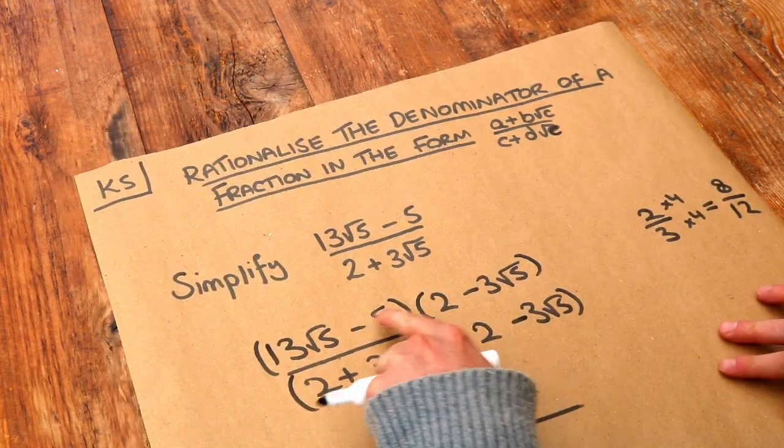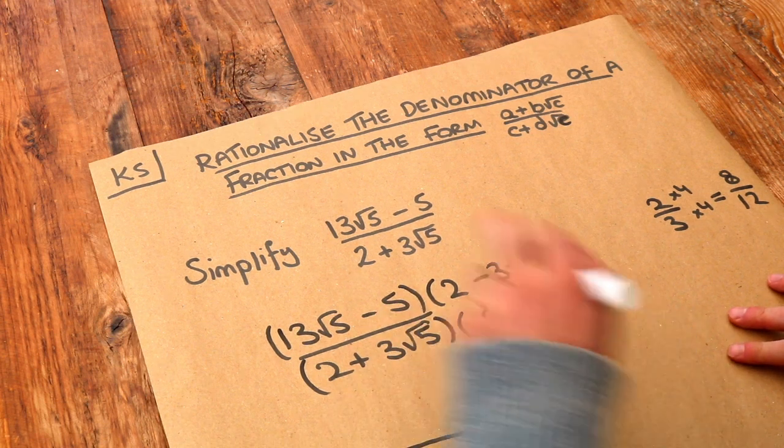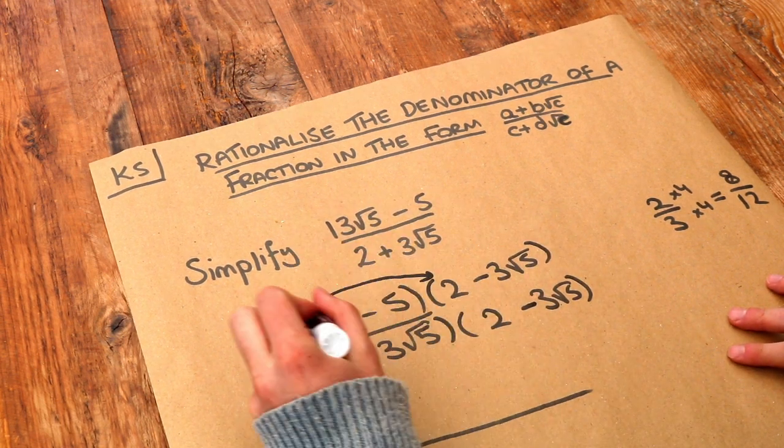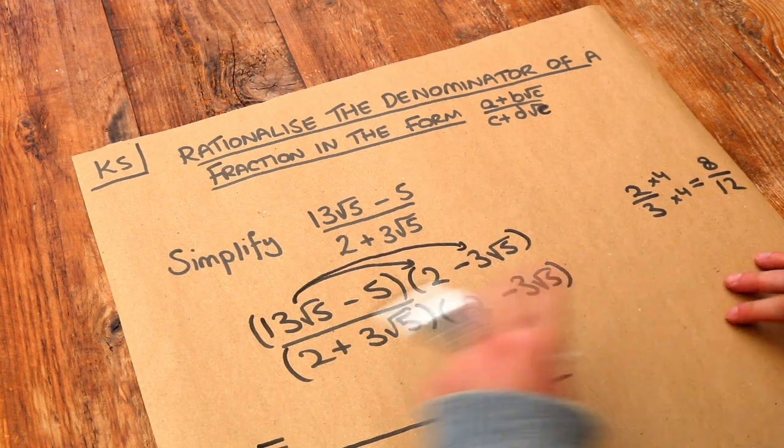And then we just need to multiply these brackets out top and bottom. So let's deal with the top. We multiply each thing in the first bracket by each thing in the second. So we do first thing times first thing, first thing times second thing first.